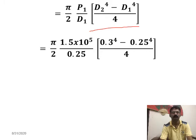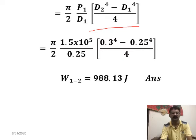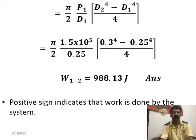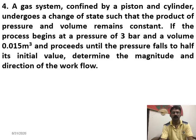Substituting the values of P1, D1, and D2, we get the work done as 988.13 joules. This is a positive value because it is an expansion process — the air causes the system to expand, volume is increasing, so this is work done by the system. Hence it is a positive quantity.